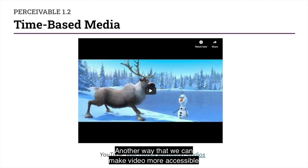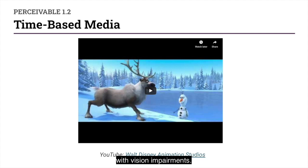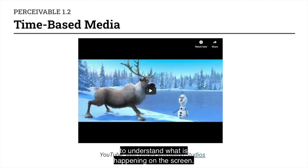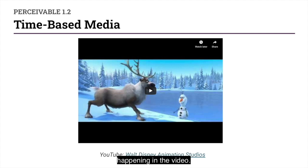Another way that we can make video more accessible is to add audio descriptions for folks with vision impairments. These folks may be able to hear the audio, but it doesn't necessarily mean that they're going to get enough context to understand what is happening on the screen. So for this example, try closing your eyes, watch the video, and put yourself in their shoes for a minute and see if you can guess what's happening in the video.